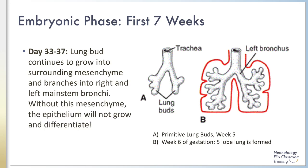Starting at day 33, the endodermal epithelium comprising the lung buds has branched and continues to grow into the surrounding mesenchyme. This branching is controlled by growth factors in the mesenchyme. The lung buds will only grow if they are exposed to bronchial mesoderm. Removal of this mesenchyme will stop the branching of the airway and can lead to structural malformation.